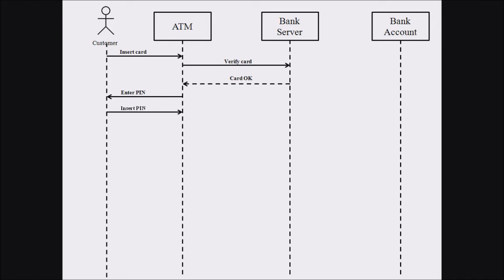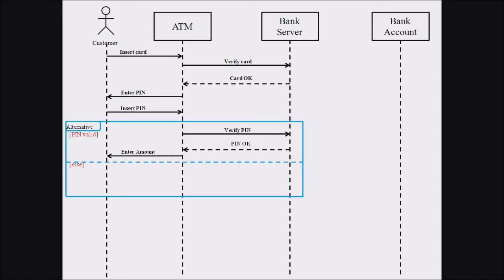When the customer inserts the pin, the ATM verifies it with the bank server, which authorizes the pin code. If the pin is valid, the customer can proceed to the transaction. If the pin is invalid, the ATM ejects the card and the transaction cannot proceed. The alternative symbol's top layer represents pin valid and the second layer represents the invalid procedure.